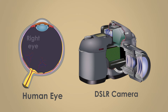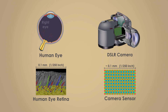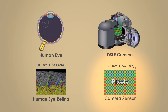In both an eye and a camera, light enters through a lens and is focused on a light-sensitive surface. This surface contains millions of small individual elements, each capturing light and measuring how much light is captured. In a camera, this surface is a flat sensor, and the individual elements are called pixels.